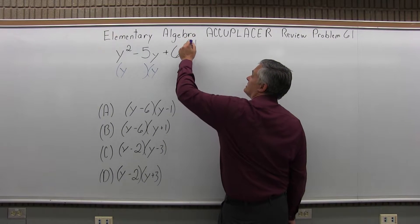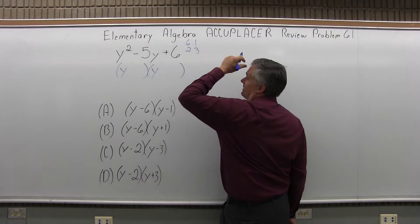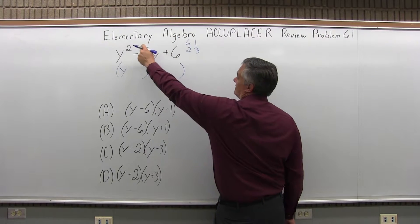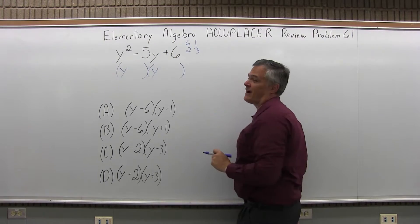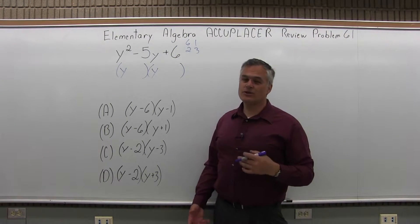So the options are 6 and 1, and 2 and 3. This one's a little bit tough because 6 minus 1 could make 5, and 2 and 3 added together could also make 5. So it could involve some trial and error.